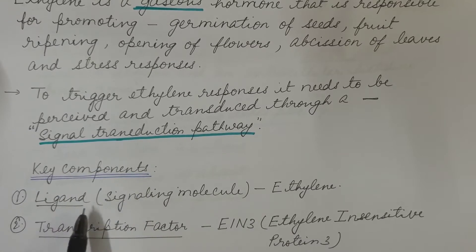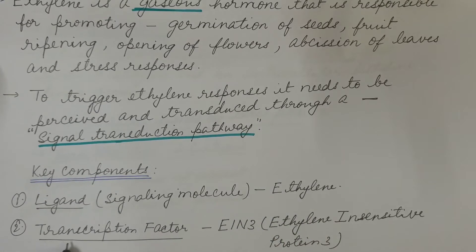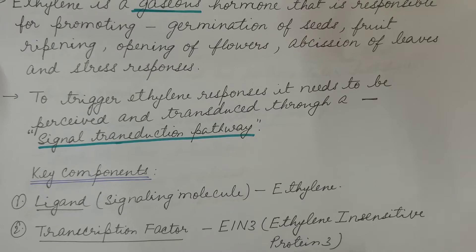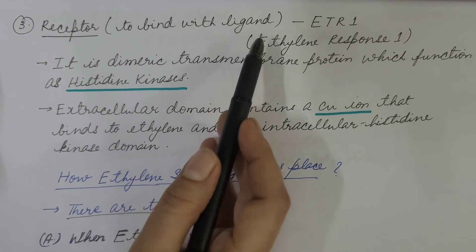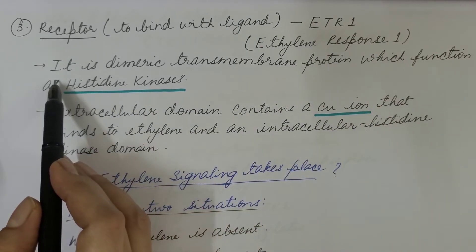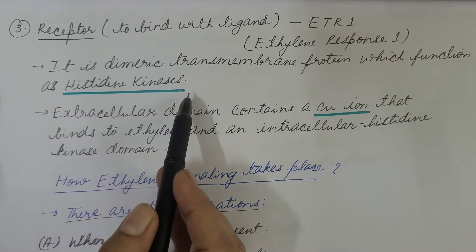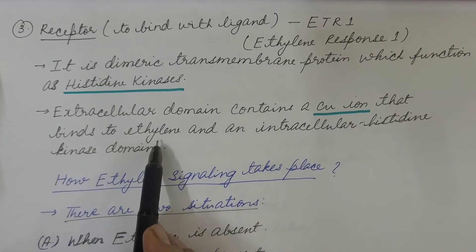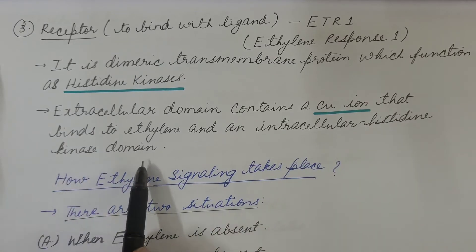First, let us look at the key components of the ethylene signaling pathway. First is the ligand, which is the signaling molecule — here it is ethylene. Second is the transcription factor — here it is EIN3, ethylene insensitive protein 3. Third is the receptor which binds with the ligand — here it is ETR1, ethylene response 1. It is a dimeric transmembrane protein which functions as a histidine kinase. The extracellular domain contains a copper ion that binds to ethylene, and an intracellular histidine kinase domain is present.